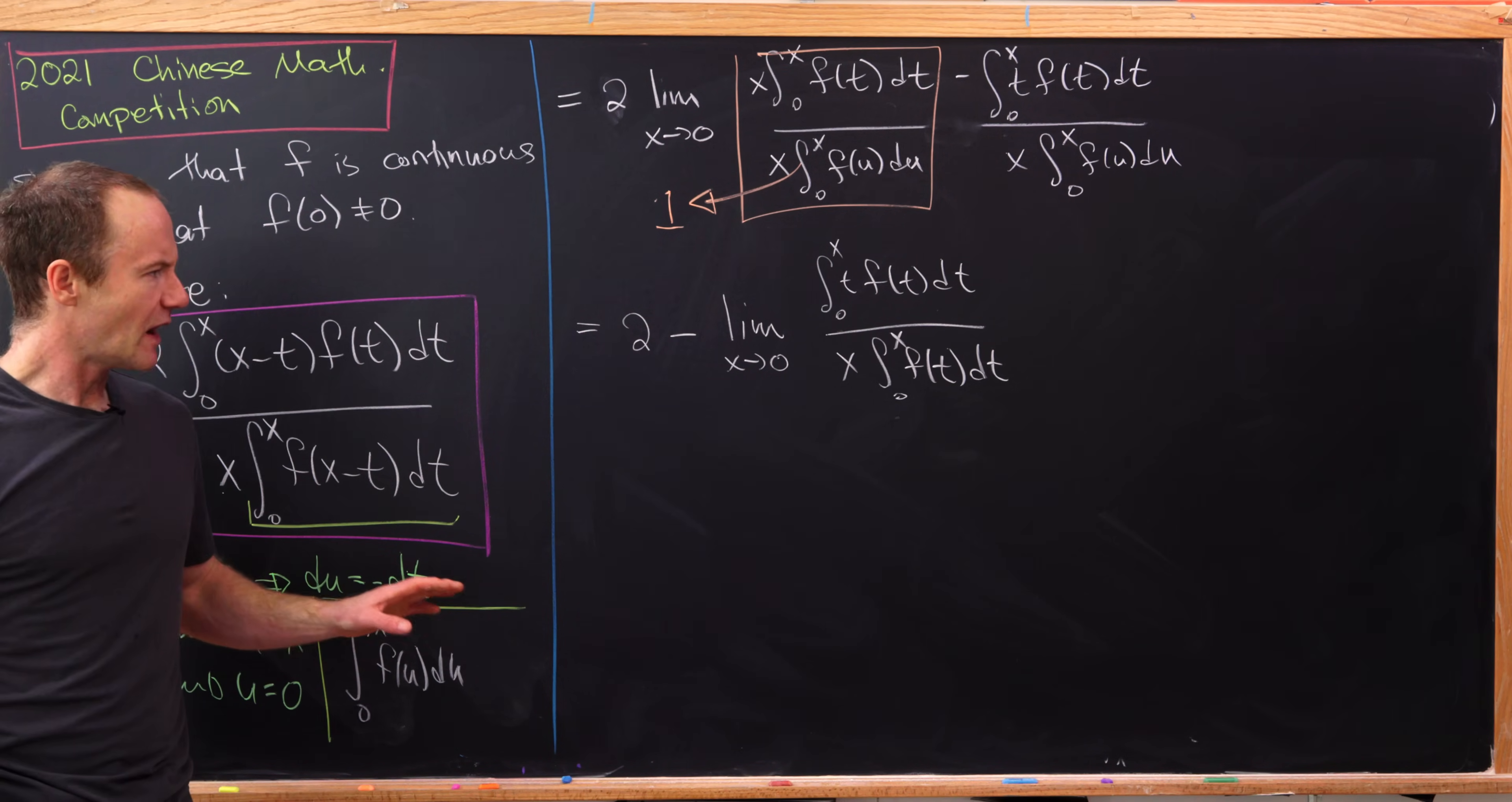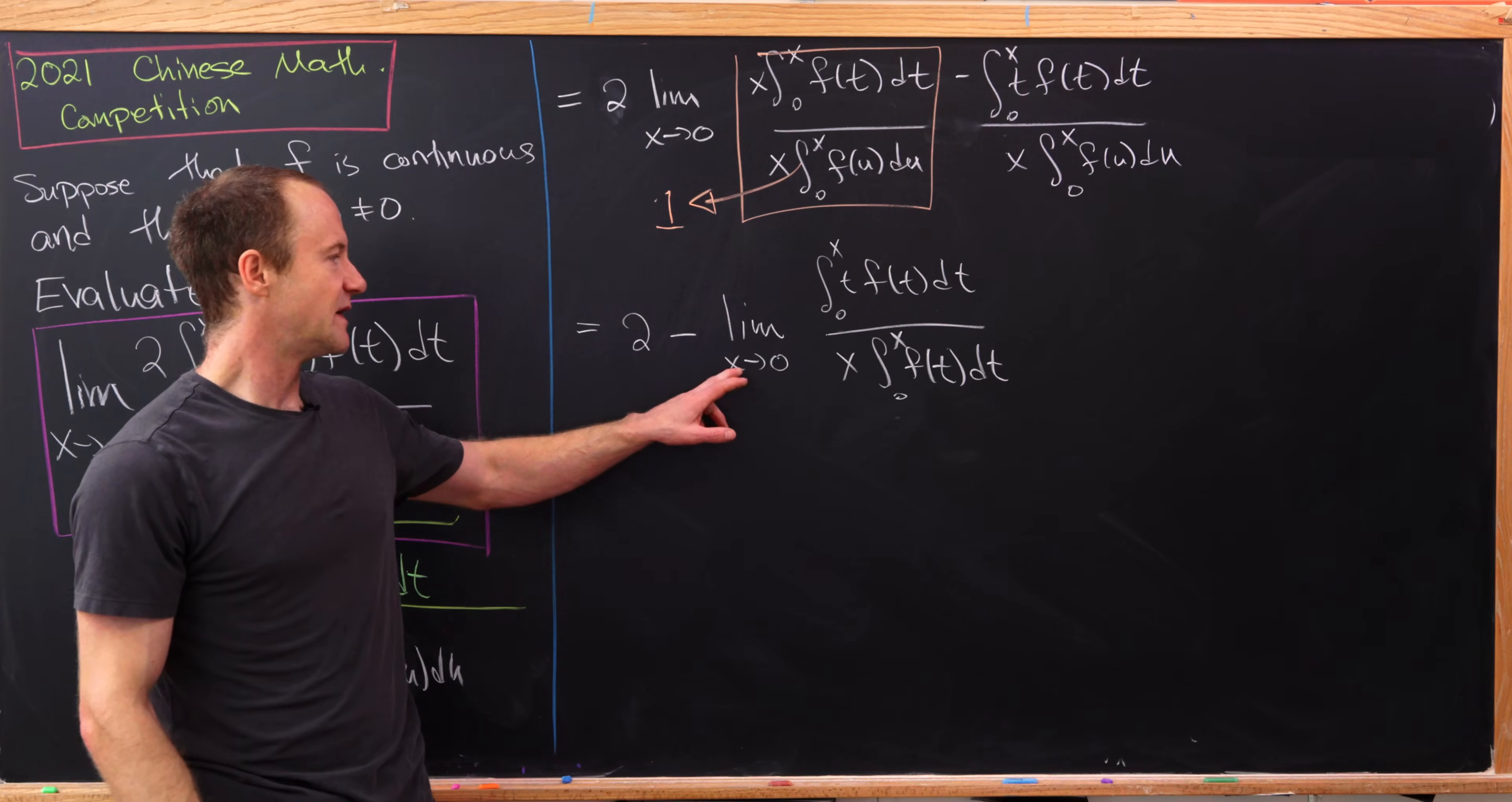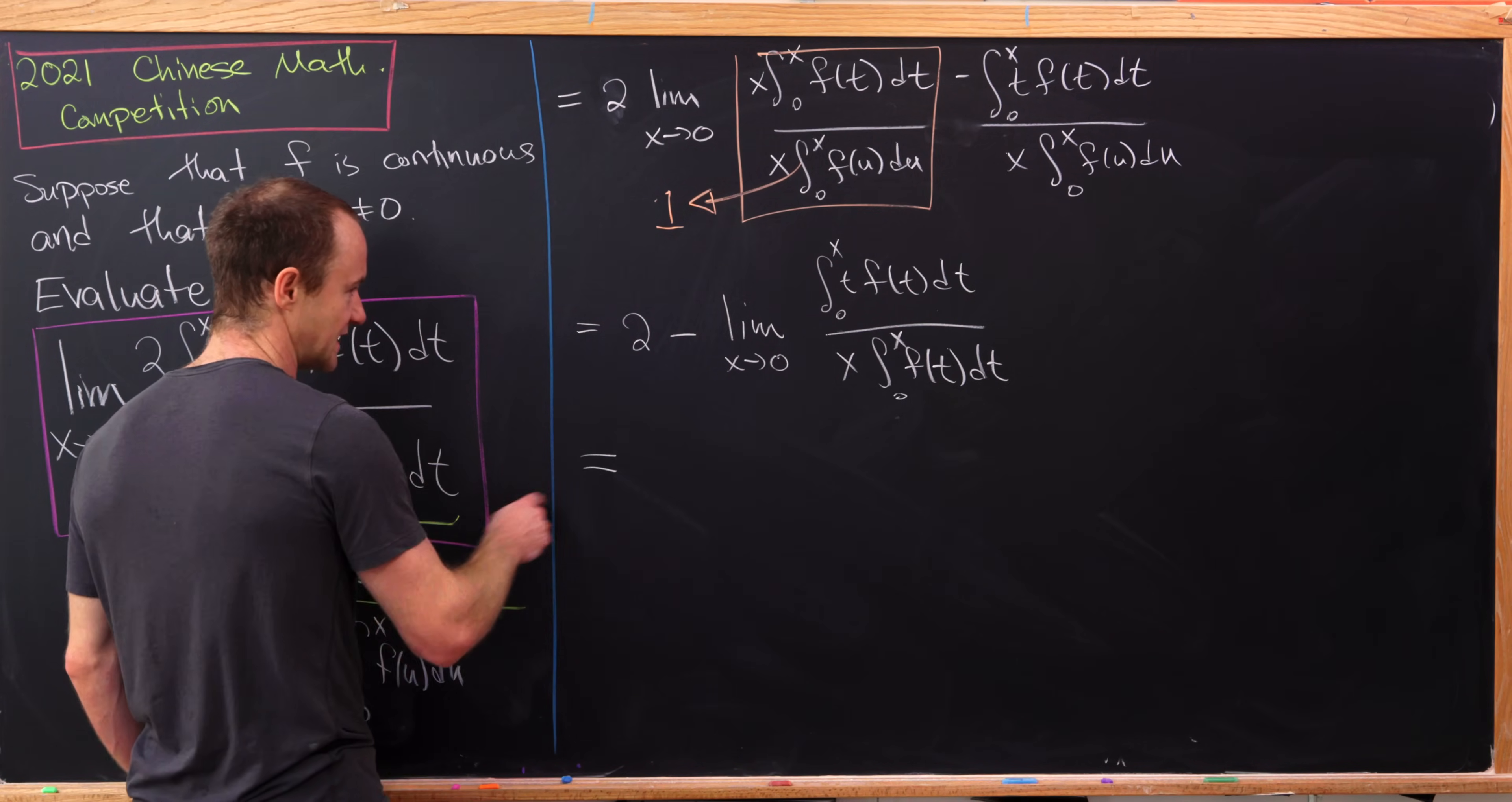Okay, nice. Now what I'll do is simply apply L'Hopital's rule because observe that I've got an indeterminate form of type zero over zero. Because as x approaches zero, the numerator and the denominator clearly both approach zero.